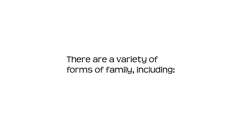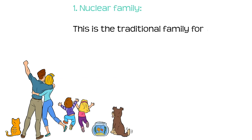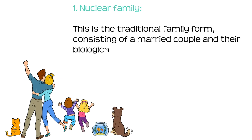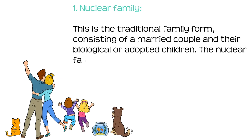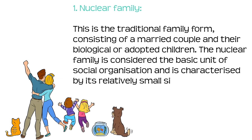There are a variety of forms of family. Number one: the nuclear family. This is the traditional family form, consisting of a married couple and their biological or adopted children. The nuclear family is considered the basic unit of social organisation and is characterised by its relatively small size and close emotional bonds.